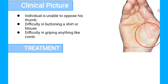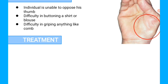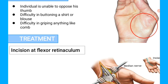The treatment of Carpal Tunnel Syndrome is a surgical procedure: incision of the Flexor Retinaculum, also called Carpal Tunnel Release. It is basically an incision at the medial side of the wrist through the Transverse Carpal Ligament. The Transverse Carpal Ligament — known as the Flexor Retinaculum — is incised to release the contents of the Carpal Tunnel, making room for the Median Nerve and saving it from entrapment.